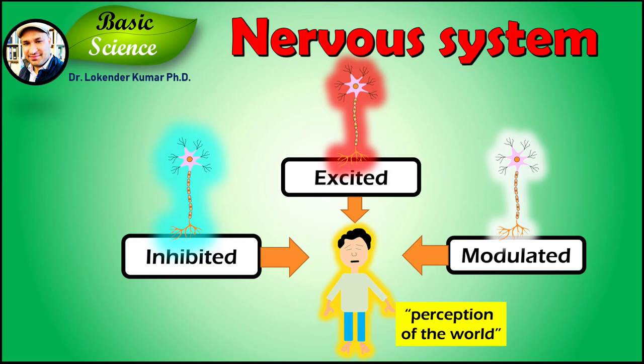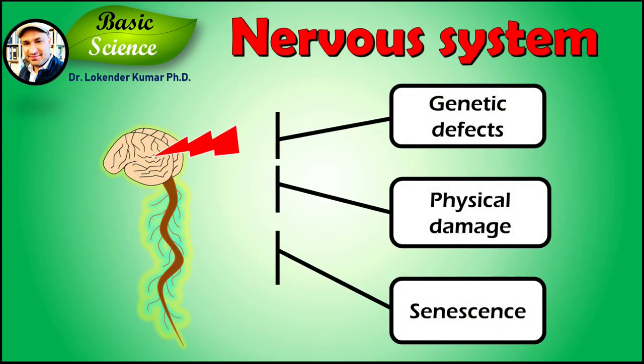The connections between neurons can form neural pathways, neural circuits, and larger neural networks that generate an organism's perception of the world and determine its behavior. The central nervous system functions to send signals from one cell to others, or from one part of the body to others, and to receive feedback. Malfunction of the nervous system can occur as a result of genetic defects, physical damage due to trauma or toxicity, infections, or simply senescence.